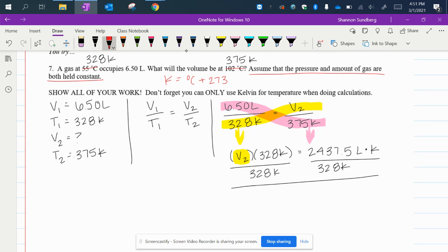When you divide something by itself, it cancels. On the right side, you're going to lose these Kelvin units for the exact same reason. So I'm going to pull down my V2, and then 2,437.5 divided by 328 gives you 7.43 liters for your V2.